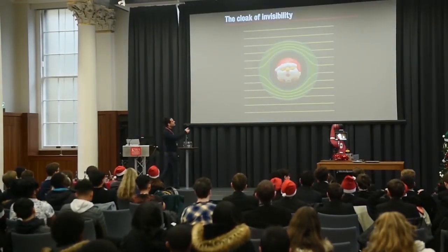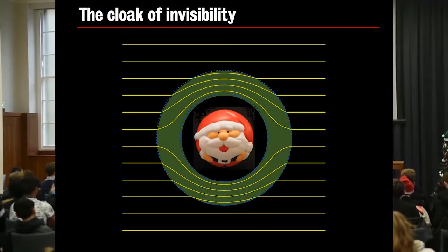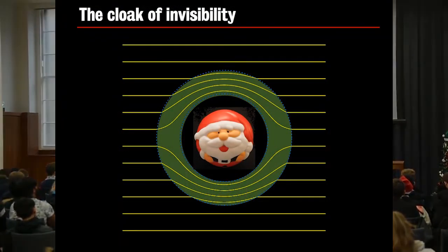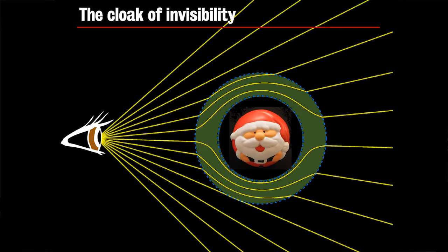So this is the way that Santa could hide in this invisibility cloak. So here I'm picturing different rays of light all going around the cloak. And remember this works for any angle. So if you are an observer here, all the rays that you're seeing, you see whatever is behind Santa. The bad thing of this cloak for Santa is that it's dark inside, because no light is actually getting into the cloak. But it's fine. It's a fine price to pay to being invisible. I think it's fine.